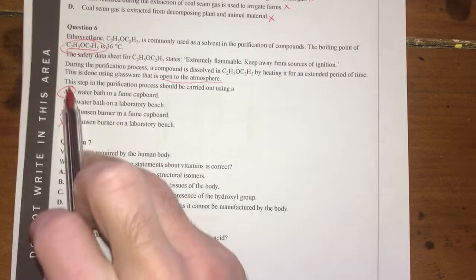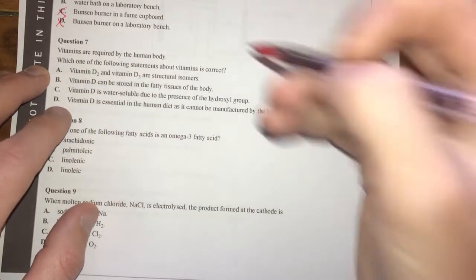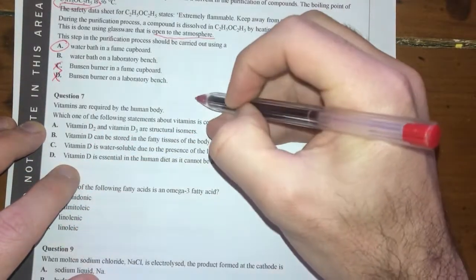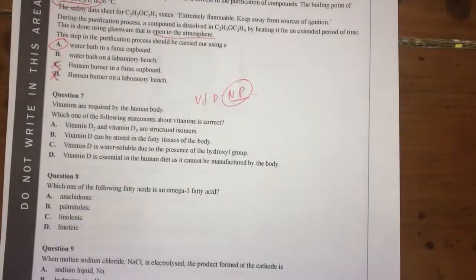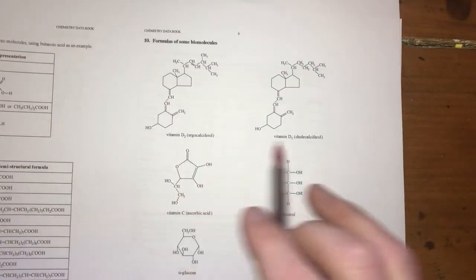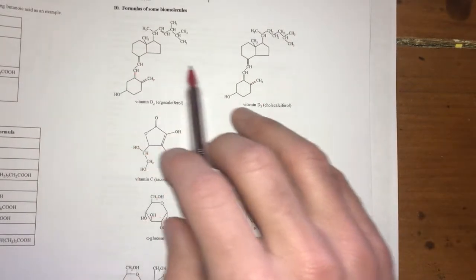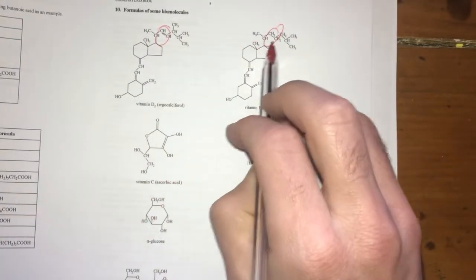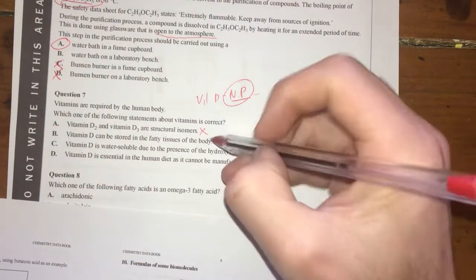Question seven: vitamins are required by the human body. Which statement about vitamins is correct? What do we know? This is all about vitamin D. Vitamin D is non-polar—that's one thing you need to be aware of. You've also got structures of vitamins in your data booklet, which are these: D2, D3, and vitamin C. These are your non-polar vitamins, this one's your polar vitamin. Vitamin D2 and D3 are structural isomers—what's the difference? This has a double bond, this one doesn't. That does not make them structural isomers, that makes them different compounds. Vitamin D can be stored in fatty tissues of the body—that is true because it's non-polar.